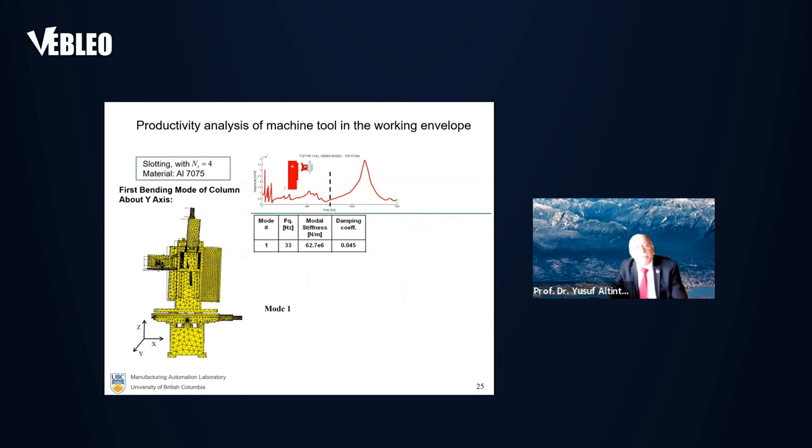For example, here, this is the simulation. Machine has a natural frequency at 33 hertz, and we realize that this is because of the wrong mounting of the motor here.